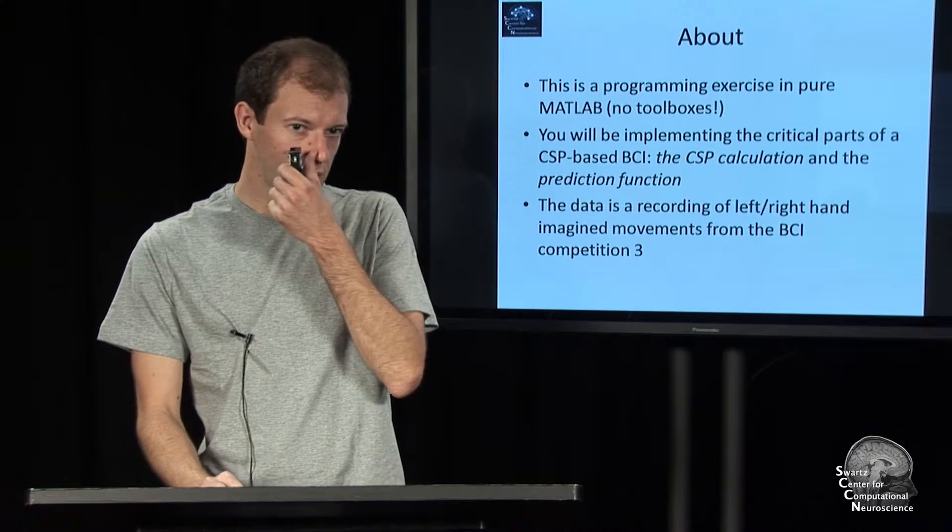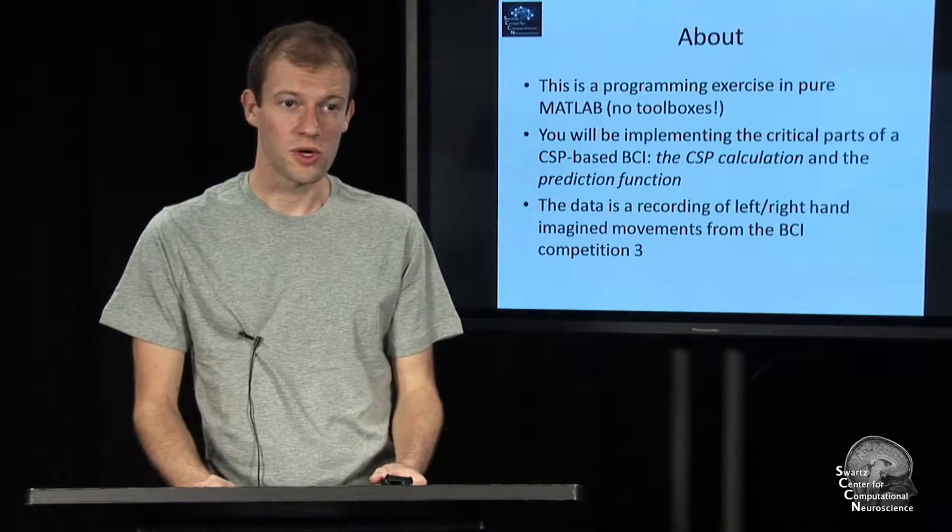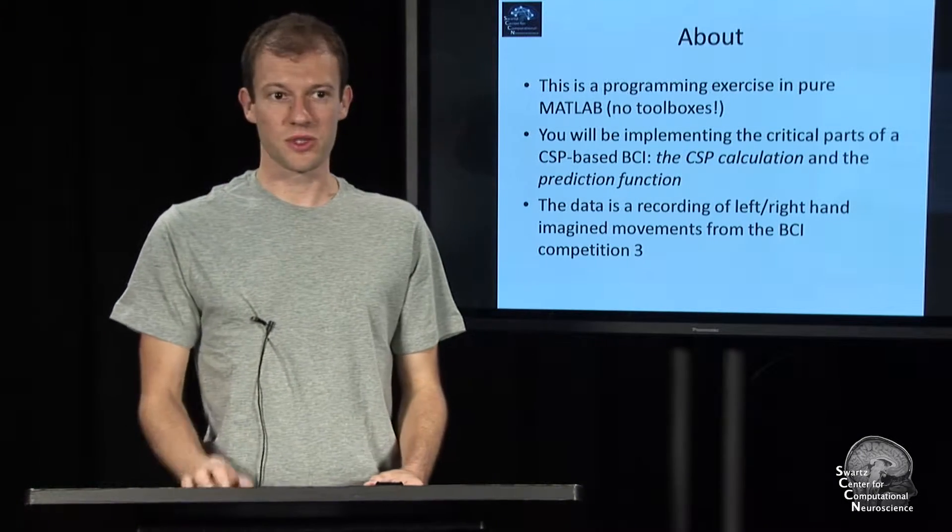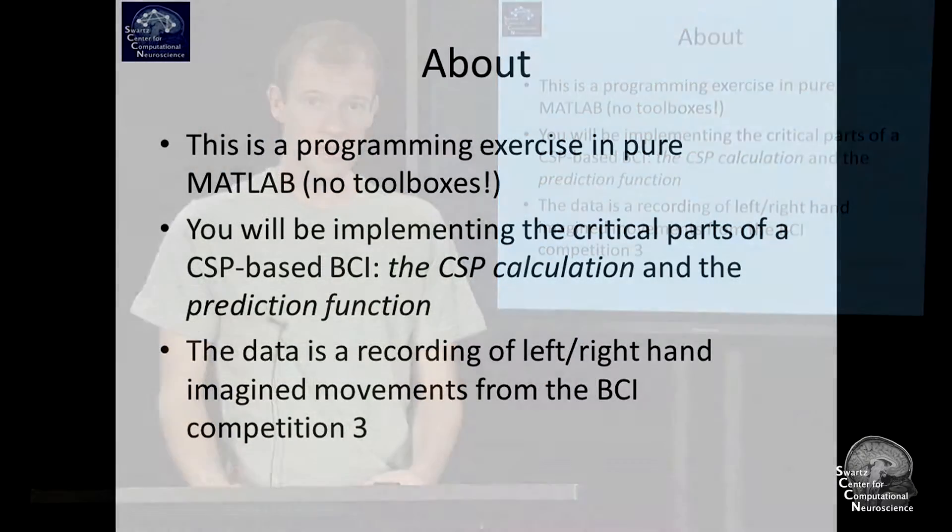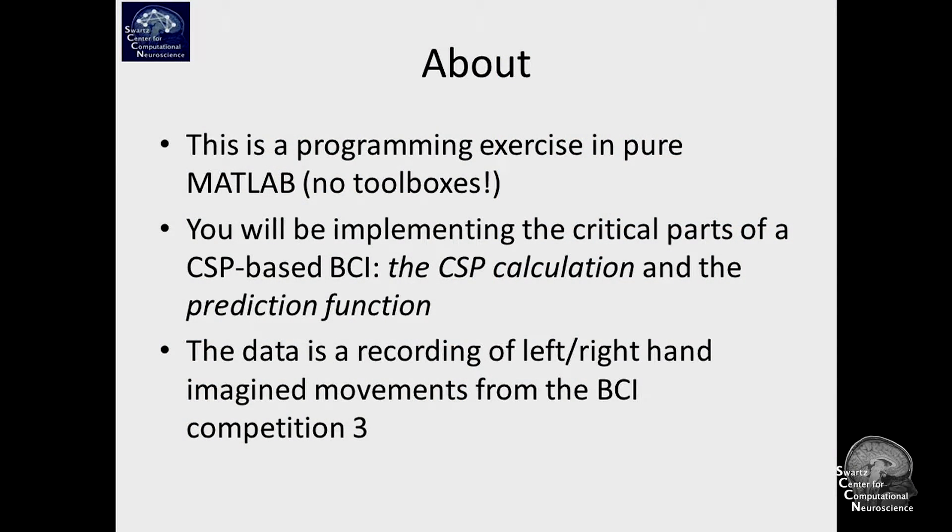This is without BCI Lab or anything, in the spirit of the first exercise. What you're basically doing is implementing two functions. One is the CSP calculation, basically the eigenvector problem and these kinds of things, and the associated—or with whatever method you want to solve it—and the prediction function for common spatial patterns.